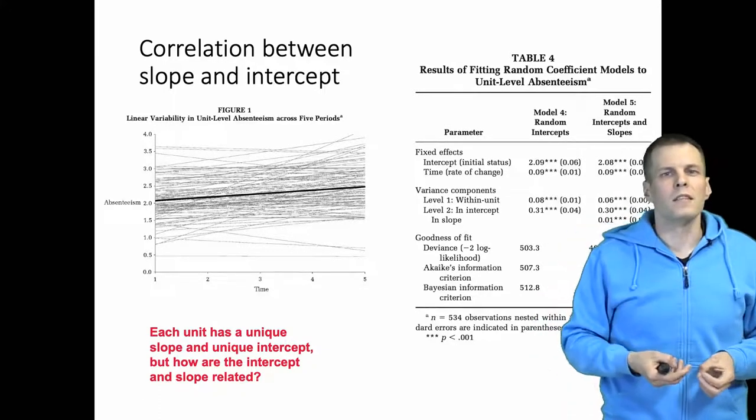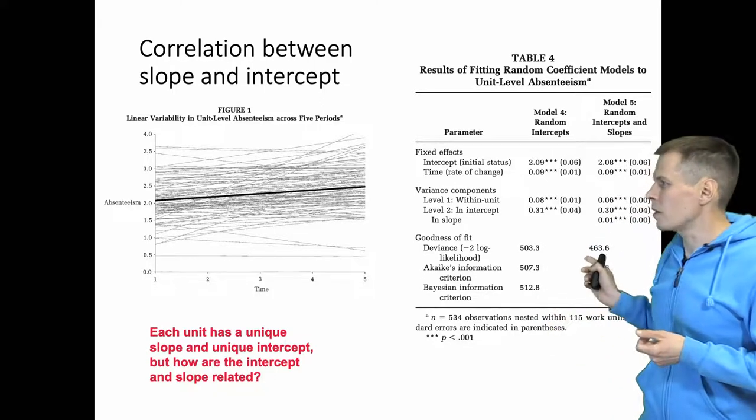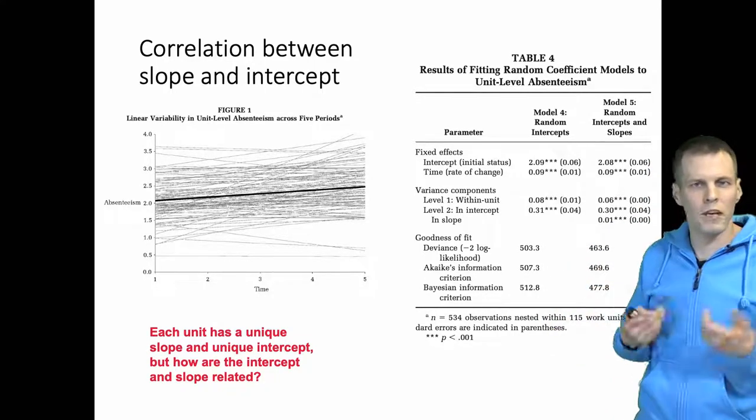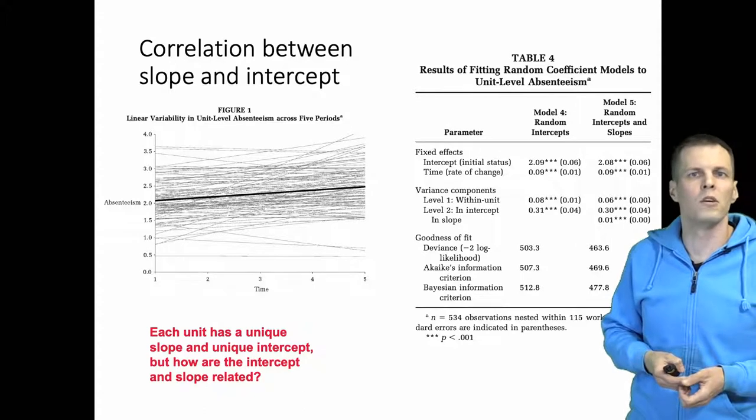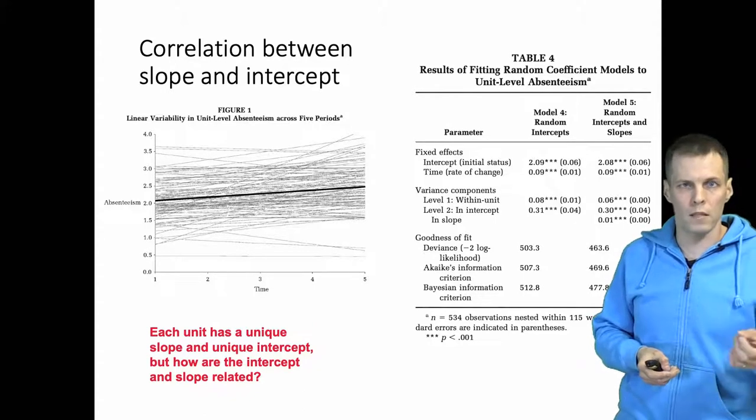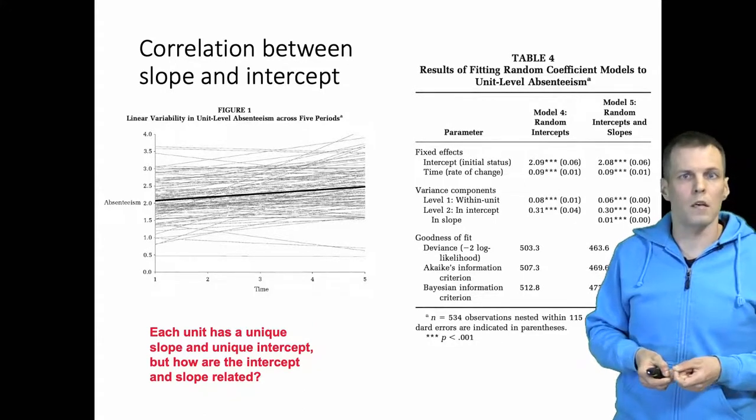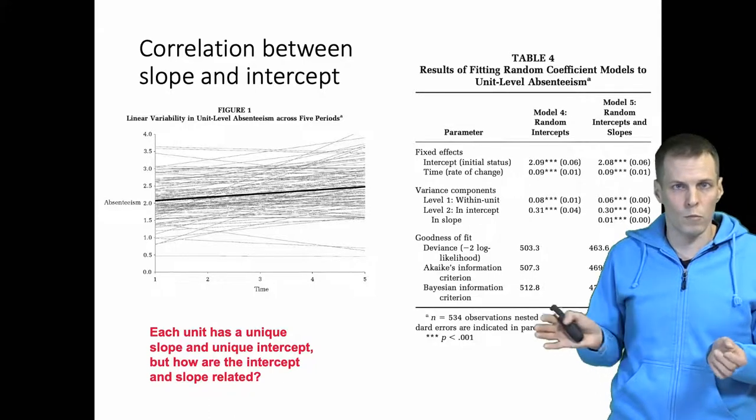The question is: does this model include that correlation? They don't report the correlation, but they actually do estimate the correlation between these two random effects—the random intercept and the random slope.